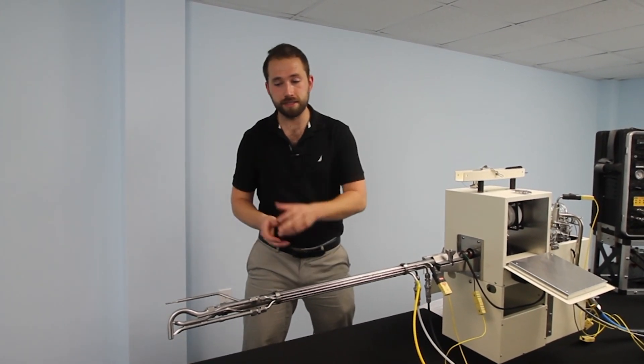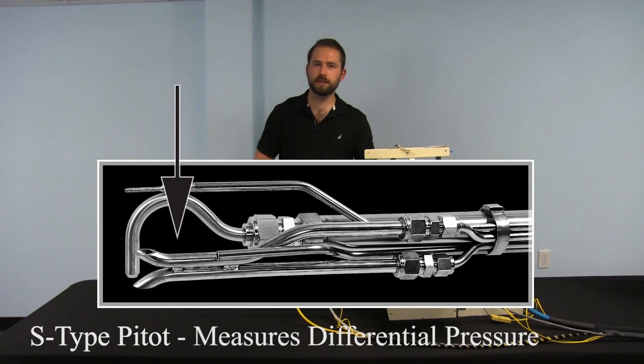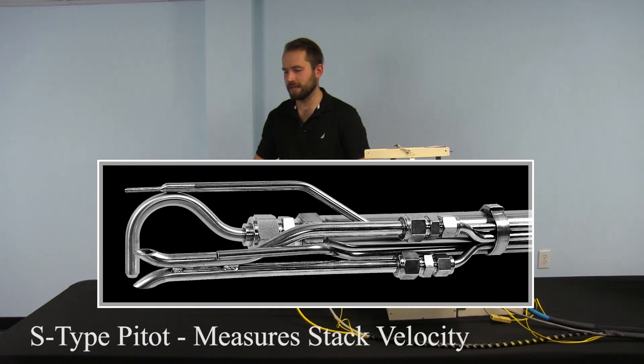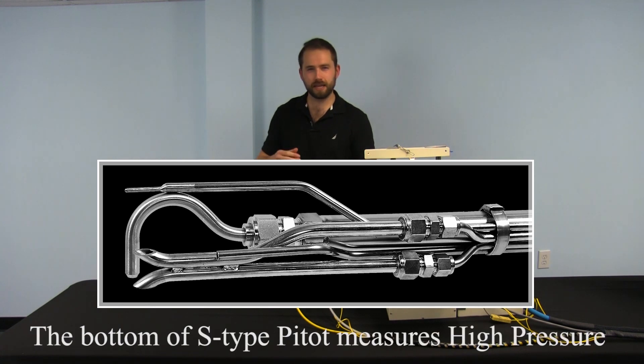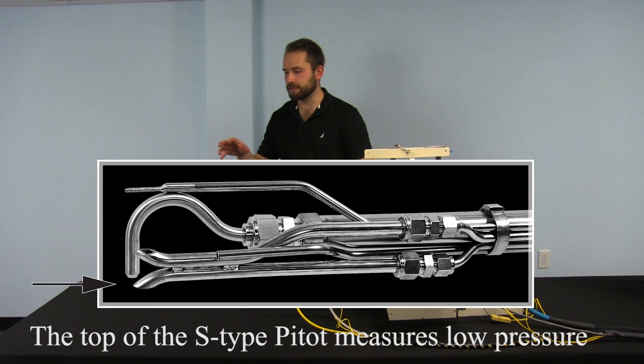Next to the nozzle is an S-type pitot. The S-type pitot measures differential pressure, otherwise known as stack velocity. As the air comes up out of the stack, the bottom of the S-type pitot measures high pressure called impact pressure and the top of the S-type pitot measures low pressure called wake.